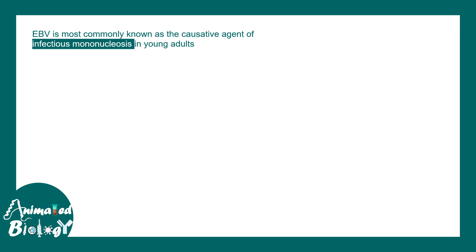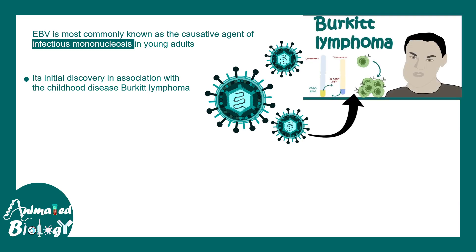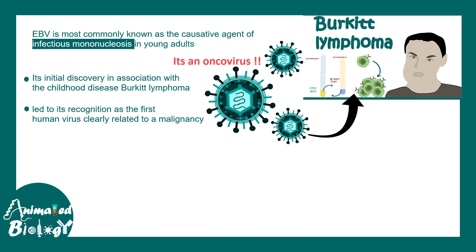EBV is most commonly known as the causative agent of infectious mononucleosis in young adults. Its initial discovery was associated with Burkitt's lymphoma, a cancer where B cells proliferate abnormally. It was one of the first viruses recognized to cause human malignancies, making it an oncovirus.